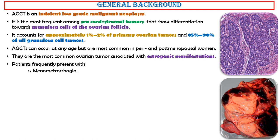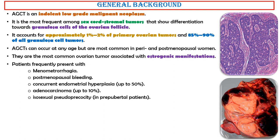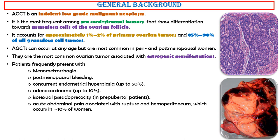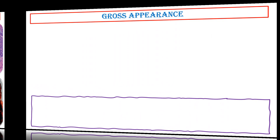Patients frequently present with menometrorrhagia and postmenopausal bleeding. Concurrent endometrial hyperplasia occurs in up to 50% of cases, and adenocarcinoma in up to 10%. Isosexual pseudo-precocity may occur in prepubertal patients. Acute abdominal pain associated with rupture and hemoperitoneum occurs in approximately 10% of women. Less commonly, the tumor is androgenic and can be virilizing. Serum beta-inhibin levels are elevated and are useful in monitoring for recurrences.